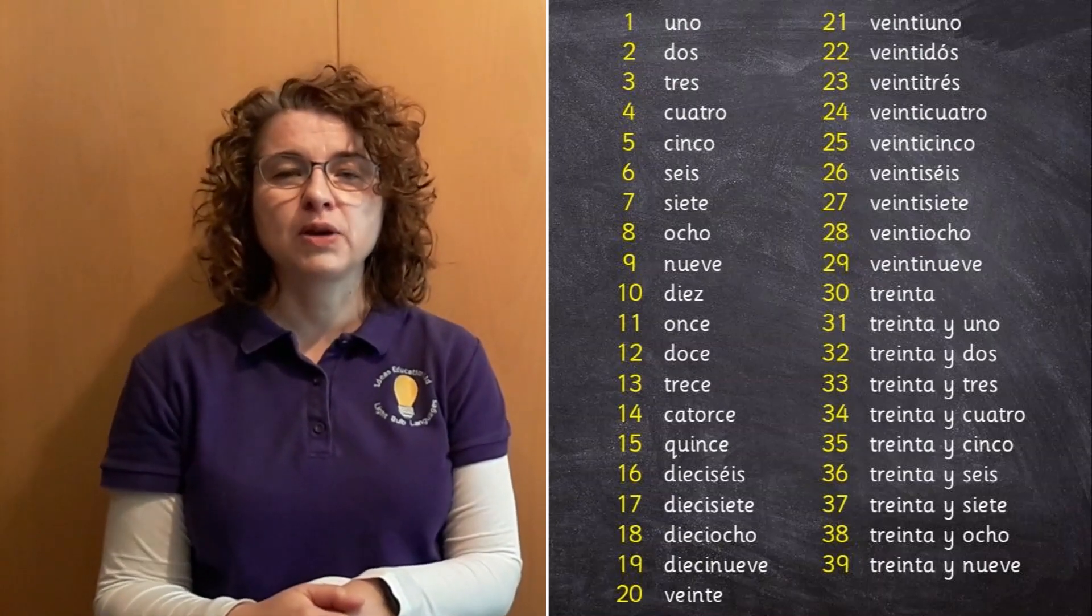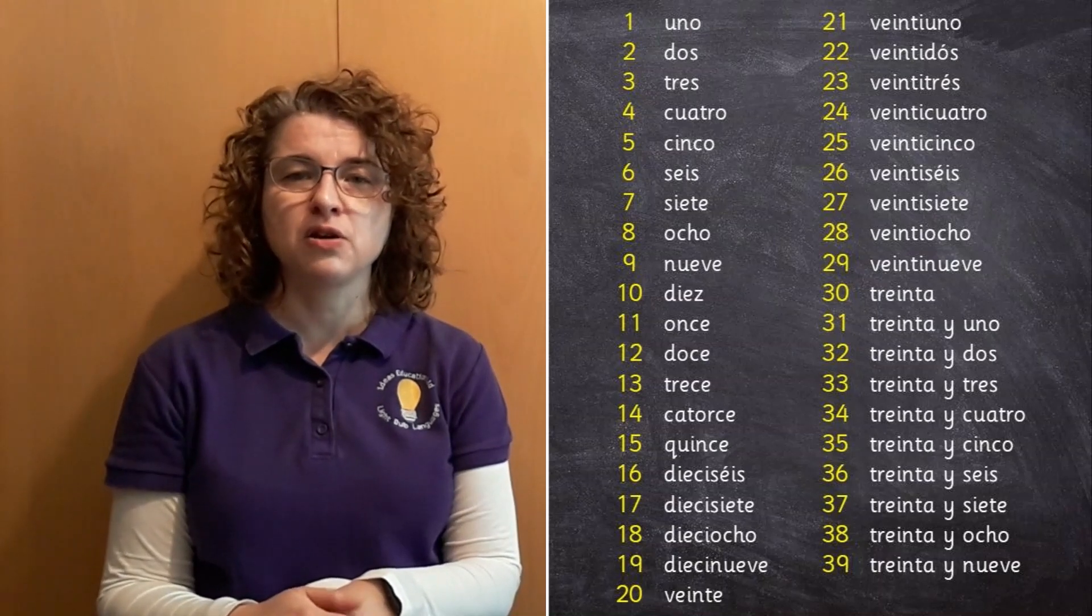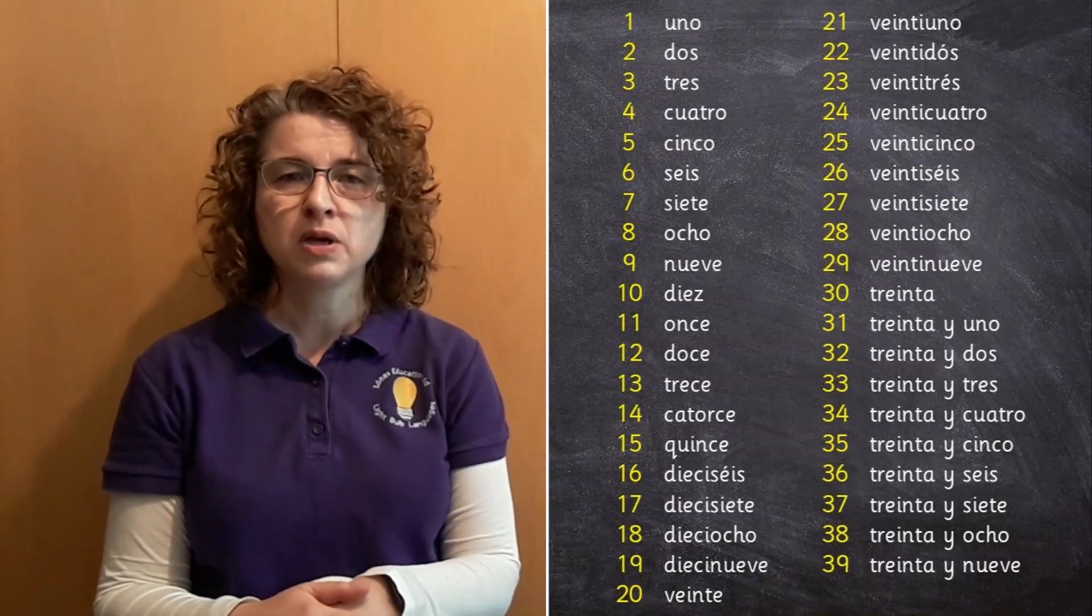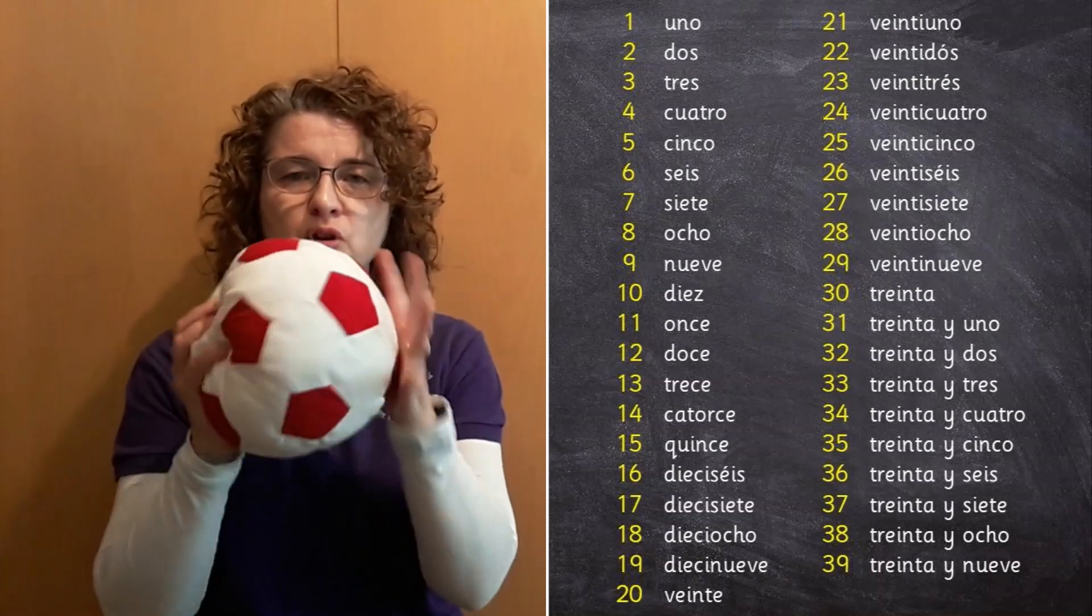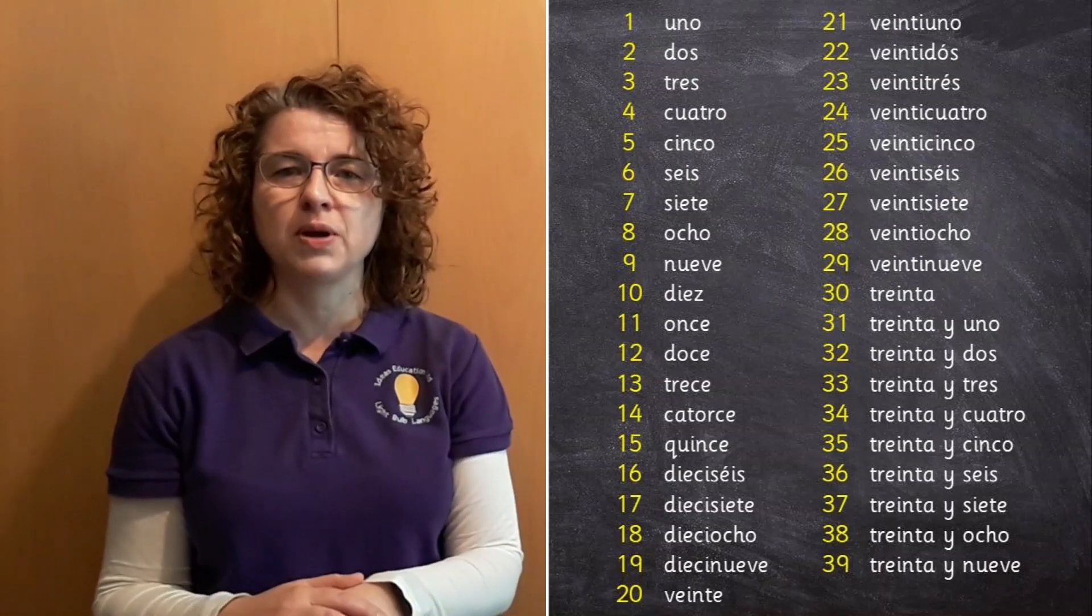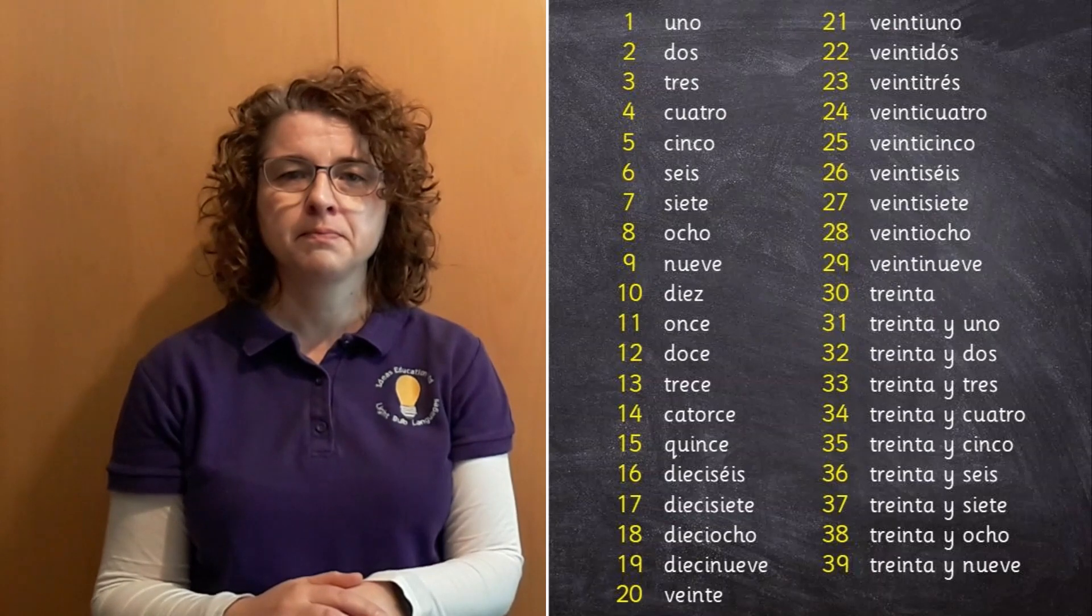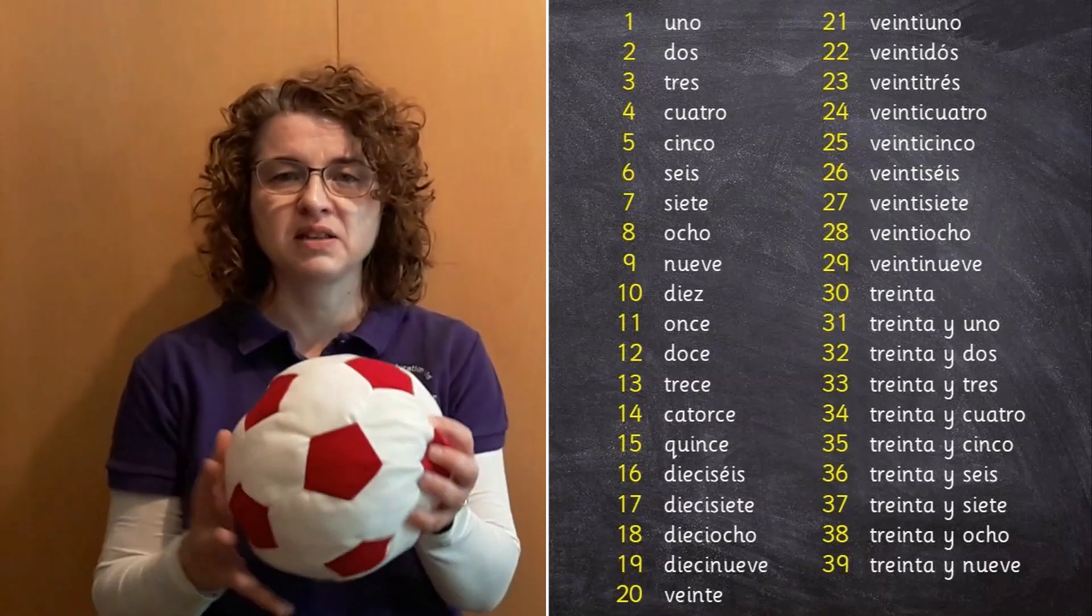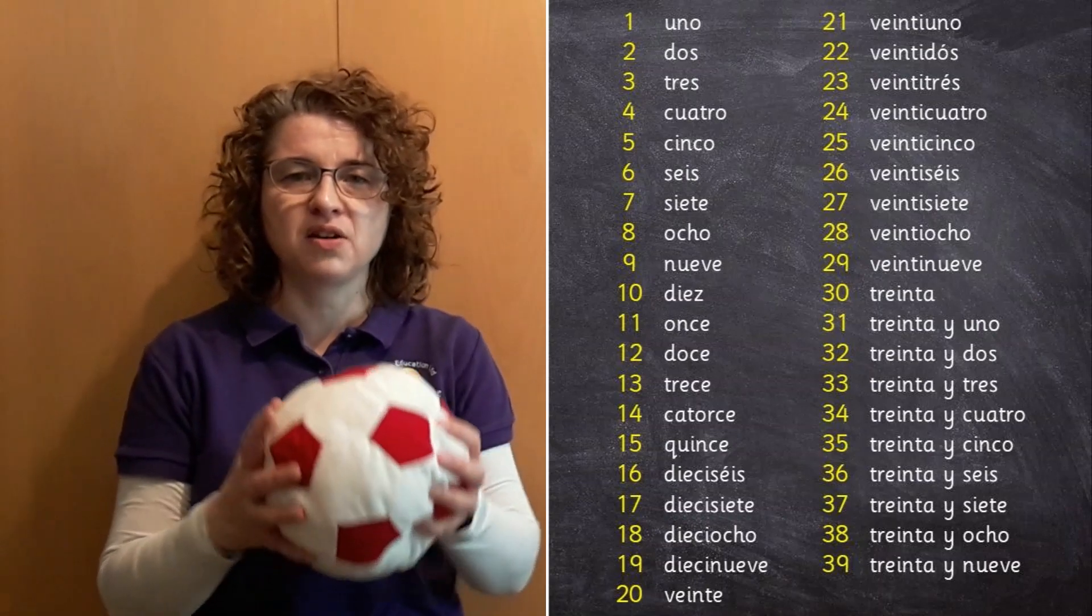First of all, let's have a quick recap of the numbers that we do already know. We're going to count up to 39 so quickly pause the video and go and get your soft ball or your soft toy to help you to throw and catch. Have you got your toy? Let's practice our numbers from 1 to 39. Are you ready?